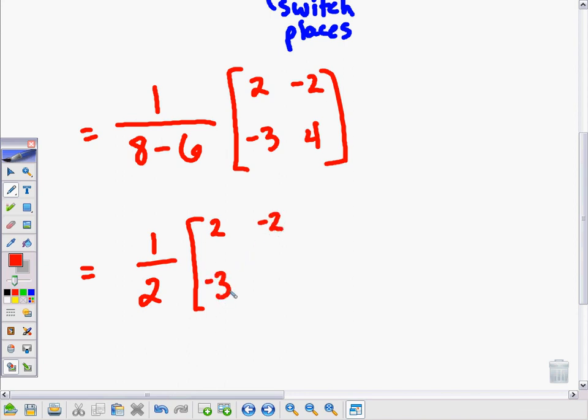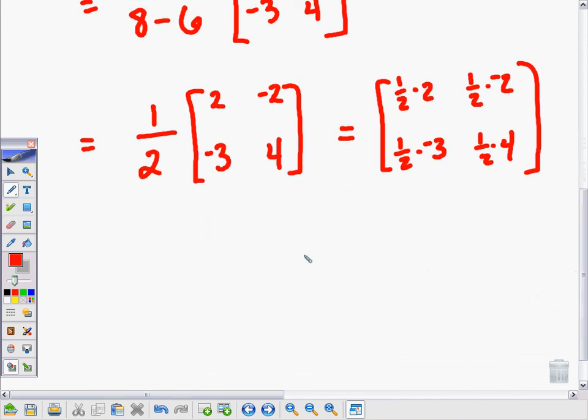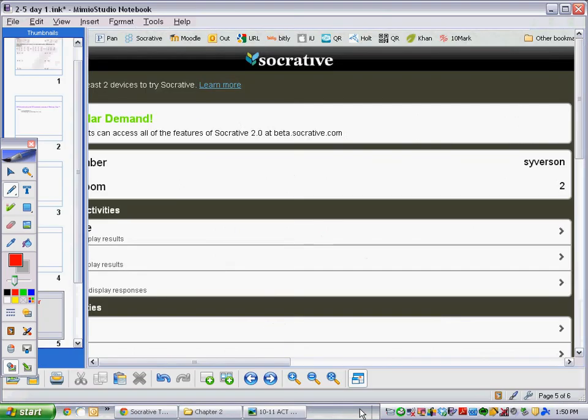One over two times the switcheroo. And now the last thing I have to do is this 1 over 2 becomes a scalar multiplier of the matrix. So the last thing is to distribute this one-half inside to each of those elements. So I get one-half times 2, one-half times negative 2, one-half times negative 3, and one-half times 4. Which gives me an end answer of 1, negative 1, negative three-halves, and 2. Boom.